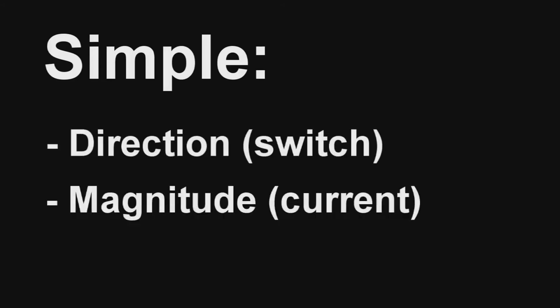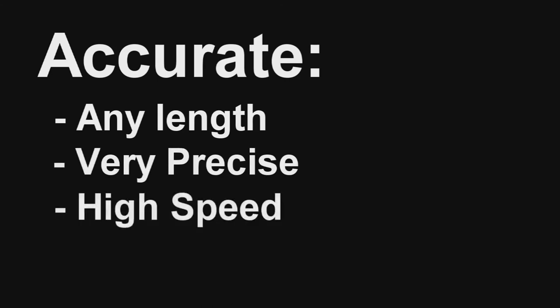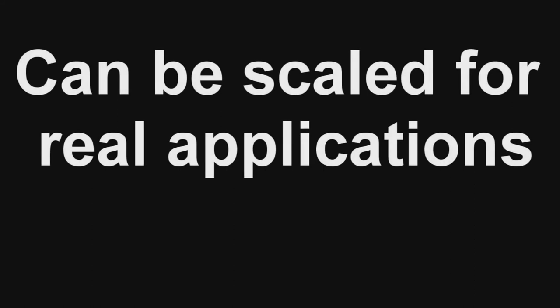So there you have it. The control system is very simple. It only has two controls, the direction and the magnitude of the force. It will remain accurate over any length of track, it can be very precise, it can operate at high speeds, and it can have redundancy.